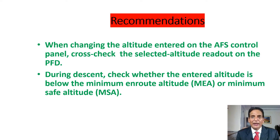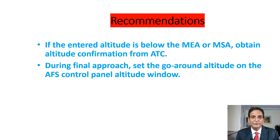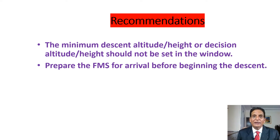When changing the altitude entered on the automated flight system control panel, pilots should cross-check the selected altitude readout on the primary flight display. During descent, the pilot must check whether the entered altitude is below the minimum en route altitude or minimum safe altitude. If the entered altitude is below the MEA or MSA, pilots must obtain altitude confirmation from ATC. During final approach, pilots must set the go-around altitude on the automated flight system control panel altitude window. The minimum descent altitude/height or decision altitude/height should not be set in the window.